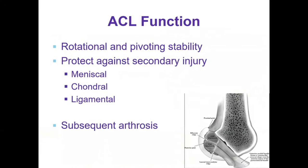The function of the ACL is threefold. Primarily, its function is to provide rotational control during pivoting and cutting sports and activity. Patients can also present with functional instability during activities of daily living. The ACL is also critically tasked with protecting the chondral surfaces, menisci, and other ligaments from secondary injury, and by virtue of this also prevents and delays the onset of future arthrosis.